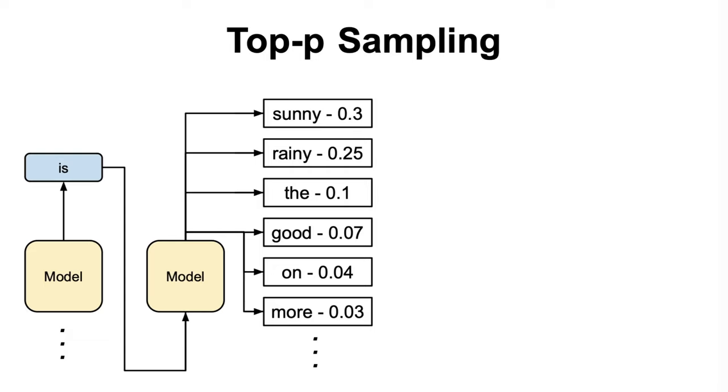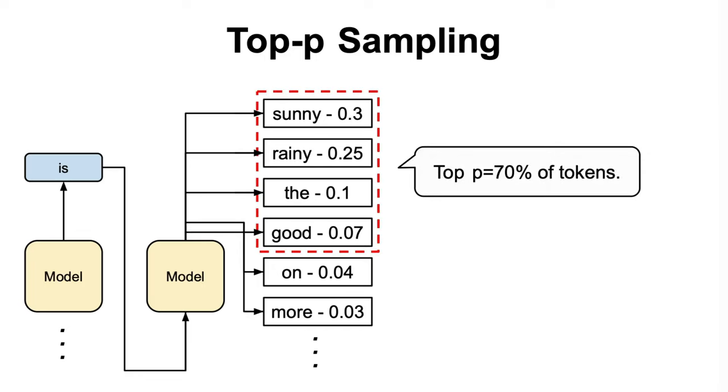Lastly, the top-p sampling technique, also known as nucleus sampling, involves selecting from the smallest set of words whose cumulative probability exceeds a predefined threshold, often denoted as p.